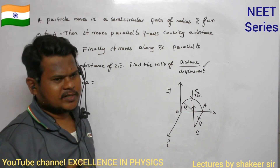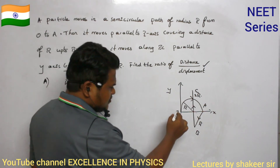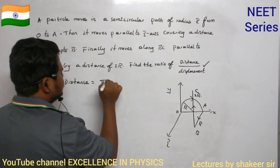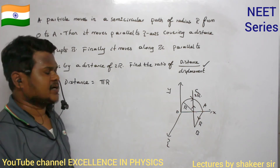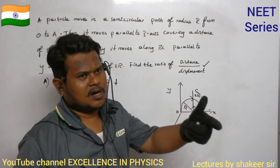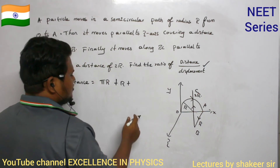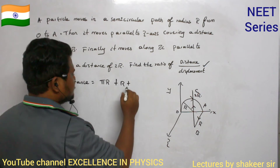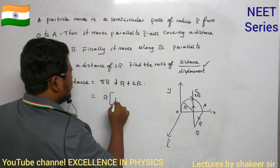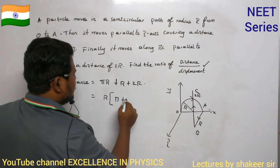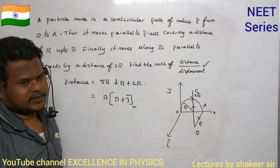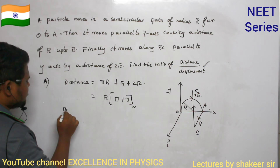Distance is the total length traveled. First the particle travels half the circumference: πr. Then along the z-axis: r. Then along the y-axis: 2r. Taking r common: distance = r(π + 2 + 1) = r(π + 3).